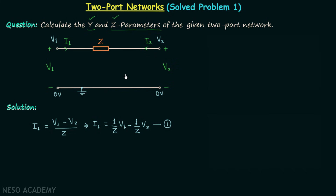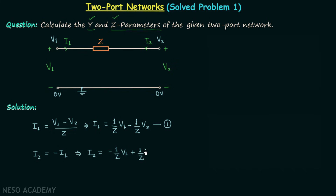Now let us find out current i2. Both i1 and i2 are the currents of the same branch but they are flowing in opposite directions. Therefore we can write current i2 equal to negative of current i1. So current i2 will be equal to minus (1/z) multiplied by v1 plus (1/z) multiplied by v2. Let's say this is equation number two.